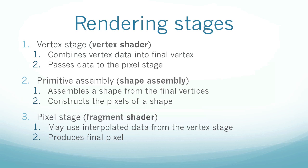So now in text, we have three rendering stages. To start off, there is the vertex stage, using the vertex shader, which is the program, as I said, that you can program yourself. The vertex stage combines vertex data into the final vertex, and passes data to the pixel stage. Then there's primitive assembly, or shape assembly, which assembles a shape from these final vertices, and constructs the pixels, the fragments, of a shape. And lastly, there is the pixel stage, using the fragment shader, which may use interpolated data from the vertex stage, and parameters from the client. And also produces the final pixel color.